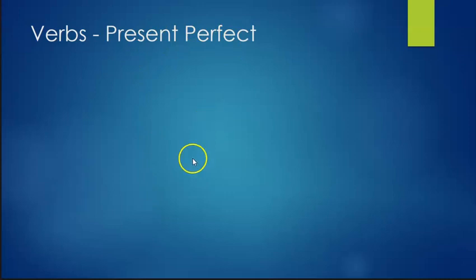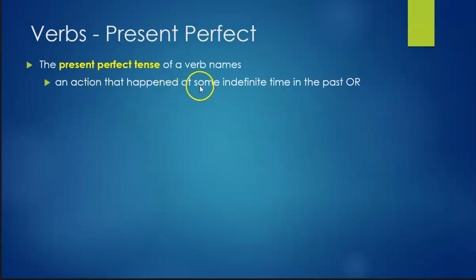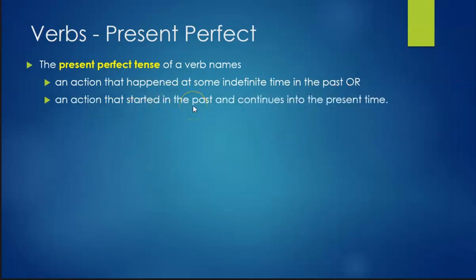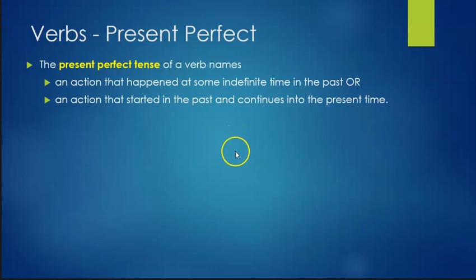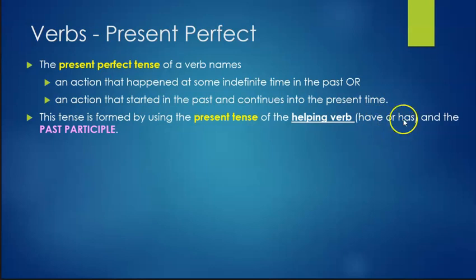The present perfect tense is used for an action that happened at some indefinite time in the past, or an action that started in the past and continues into the present. There are specific times we would want to use present perfect — we wouldn't want to use it in every situation. The tense is formed by using the present tense form of the helping verb — have or has depending on your subject — and the past participle of your main verb.